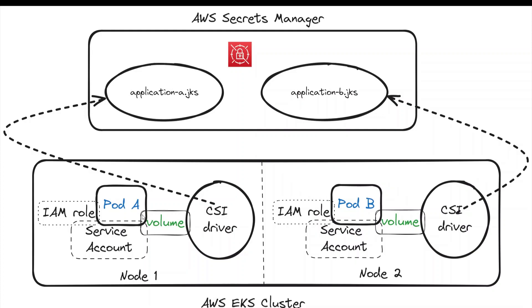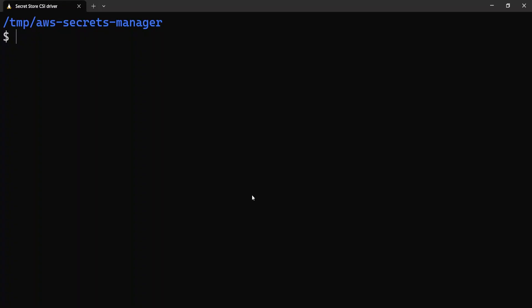Pod A can then refer to the JKS file using the path provided in the volume mount. The same applies to pod B. So this is how the CSI driver works — by fetching the secret from Secrets Manager and making it available as a volume, which the pods can then mount using volume mounts. Let's move on to a demo to understand this better.